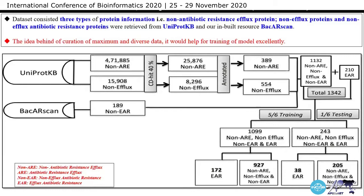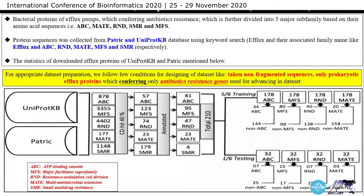These sequences were divided into 5/6 for training purposes and 1/6 for testing purposes. Similarly, in the Tier 2 dataset, we used only bacterial efflux proteins conferring antibiotic resistance.